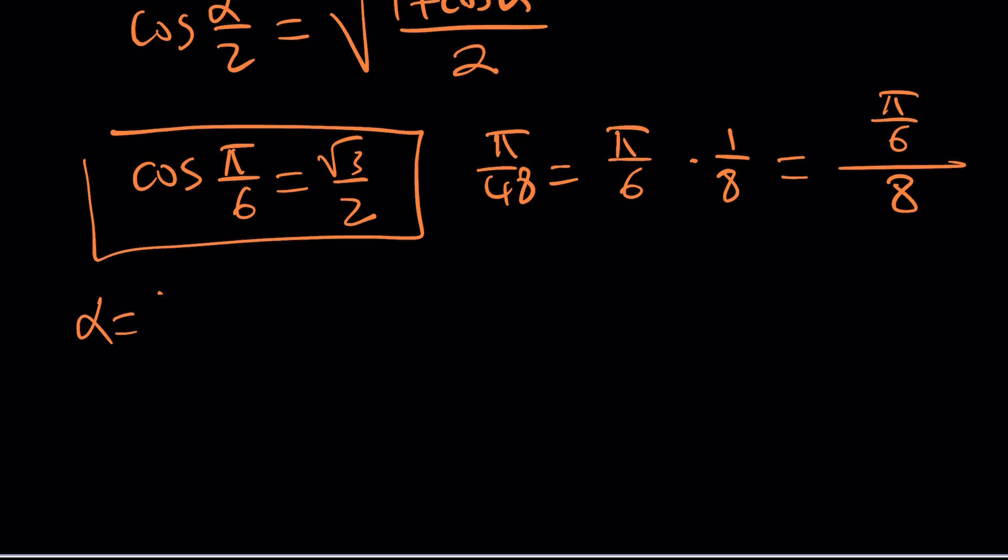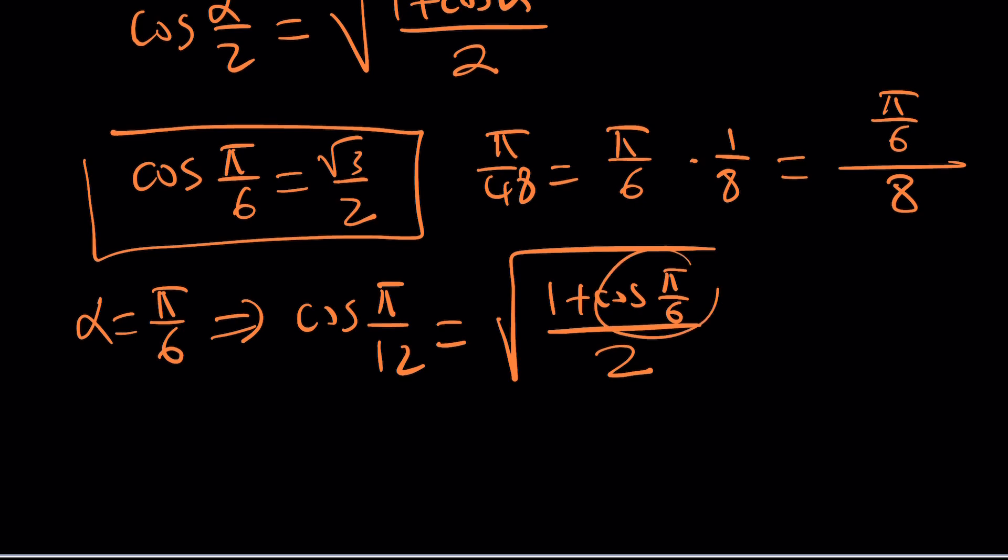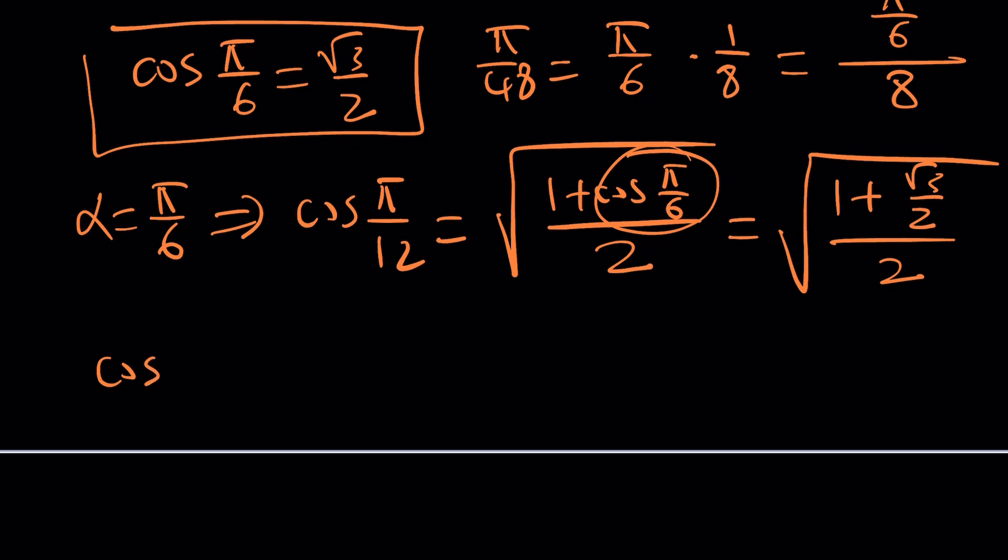First set alpha equal to pi over 6. That'll give you cosine of pi over 12 equals square root of 1 plus cosine of pi over 6 divided by 2. Now replace cosine pi over 6 with root 3 over 2. That's going to give you the square root of 1 plus root 3 over 2 divided by 2. Let's simplify this. We can write cosine pi over 12 as 2 plus root 3 divided by 4, and the square root of that.